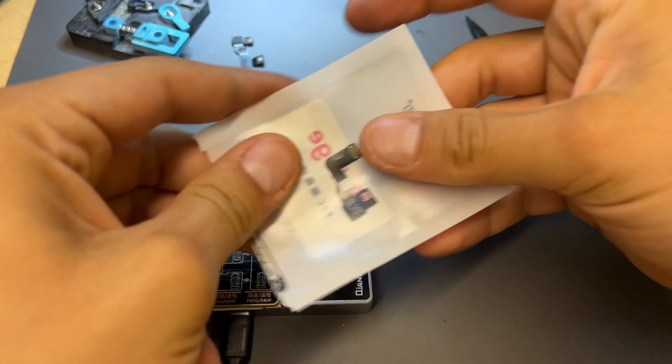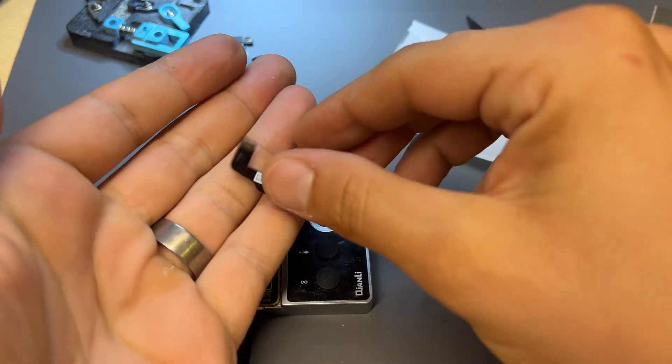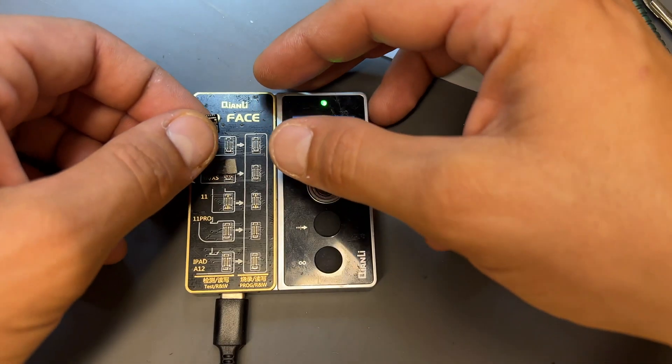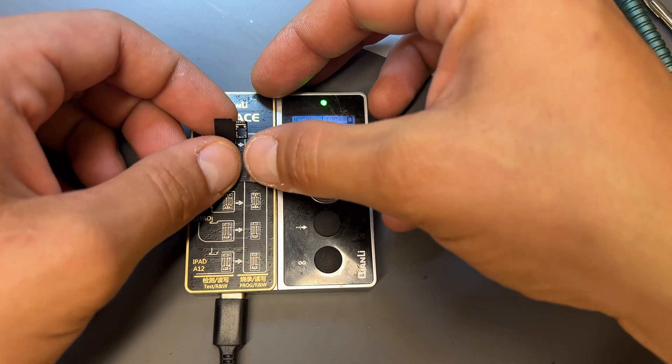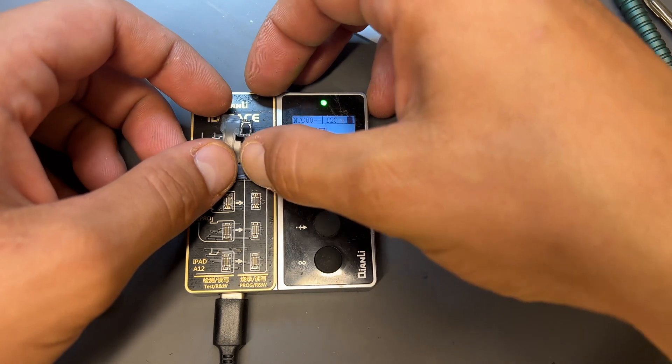I use these Qianli ones because they were in stock from the supplier at the time, but the JC ones work just as well, but it won't work with this ID face tool. You'll need the JC V1S to do the same job.